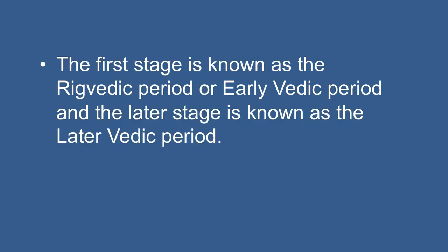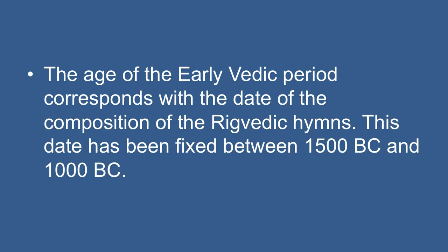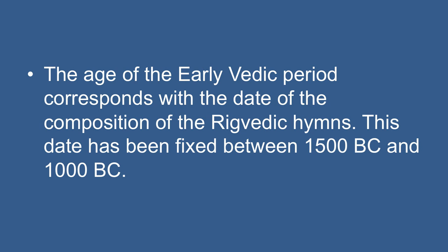The first stage is known as the Rig Vedic period or early Vedic period, and the later stage is known as the later Vedic period. The age of the early Vedic period corresponds with the date of the composition of the Rig Vedic hymns, fixed between 1500 BC and 1000 BC. The later Vedic period is placed between 1000 BC and 600 BC. Recently, the Rig Veda has been included by UNESCO in the list of literature signifying world human heritage.